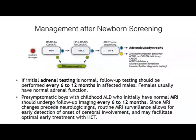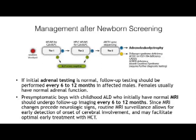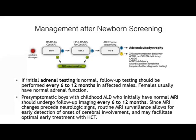What does newborn screening consist of? We measure C26 lyso PC in the first tier. If it's elevated, a second tier test repeats this testing. If it is still elevated, then sequencing for ABCD1 mutations is performed. If that is negative, several other diseases are tested for that may lead to elevations in very long chain fatty acids. Once you have a positive newborn screening test, it's important to start testing adrenal function at least every six months in boys and to have brain MRIs every six to twelve months.